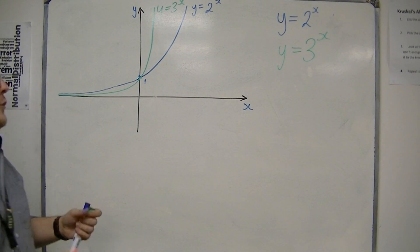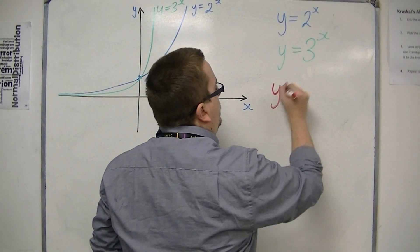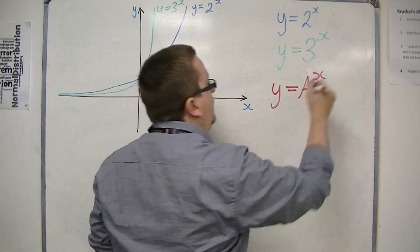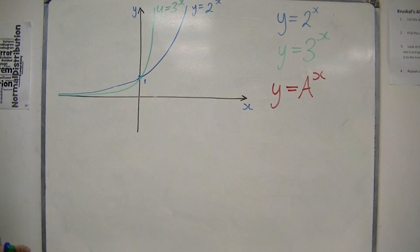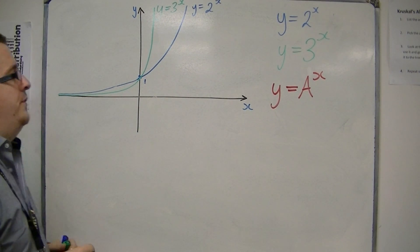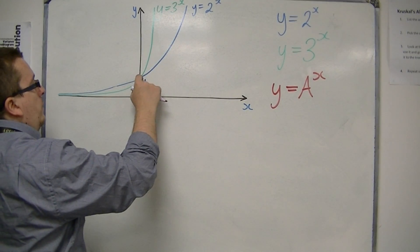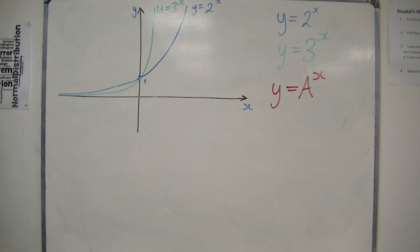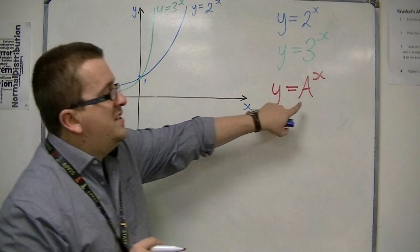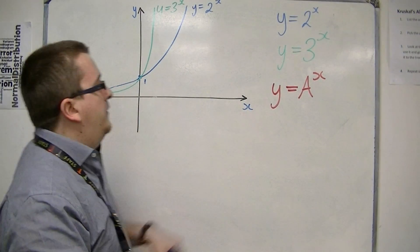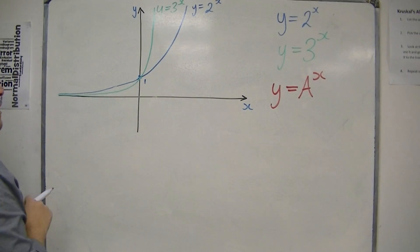And no matter how you sketch it, be it y is equal to a to the x, any number to the power of x, but we'll just stick with positive numbers for the time being, then all of these will go through 1, because a to the 0 is 1. So they'll all go through that point on the y axis.